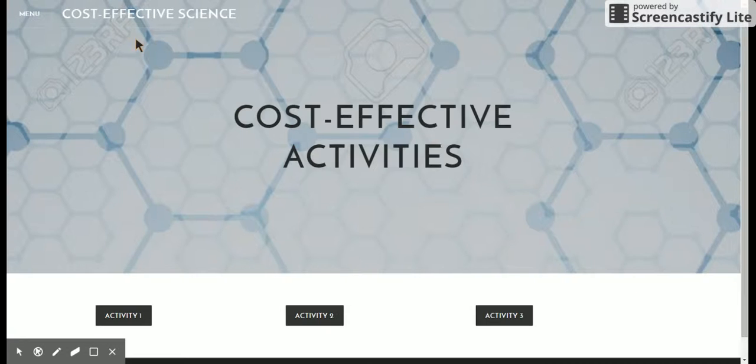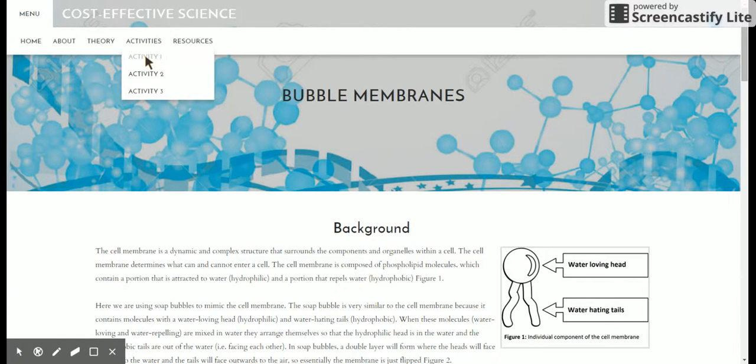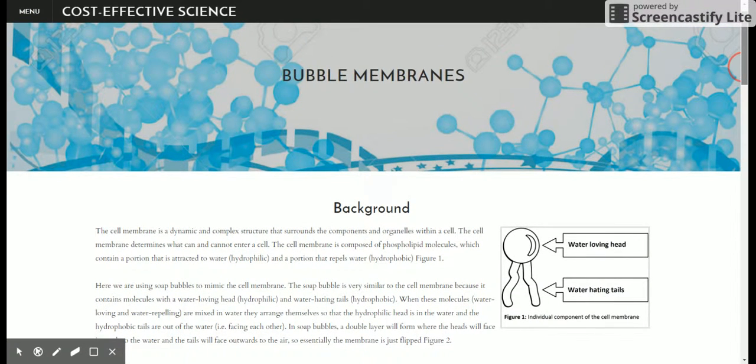If you go to that activity tab, you can see that I have created three different activities. Here we are going to look in on our first activity, which you can click there, or you can go up to the menu and click on activity one. The first activity that I'm looking at is called bubble membranes. I'm not going to go into depth on what each activity is, but I'm going to tell you about the components present in each of the three activities.